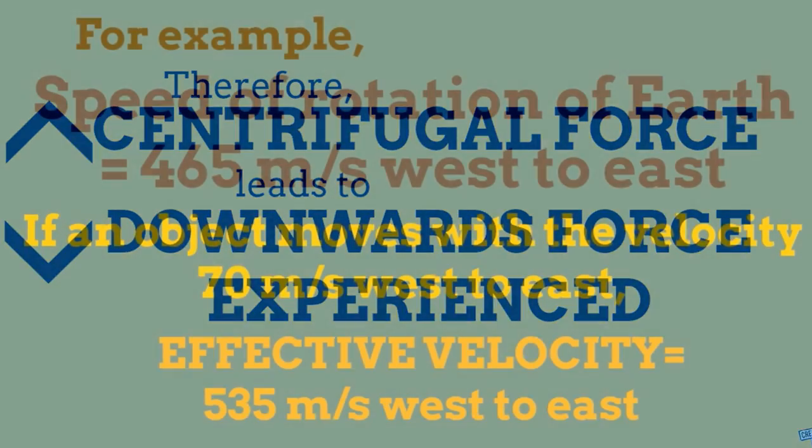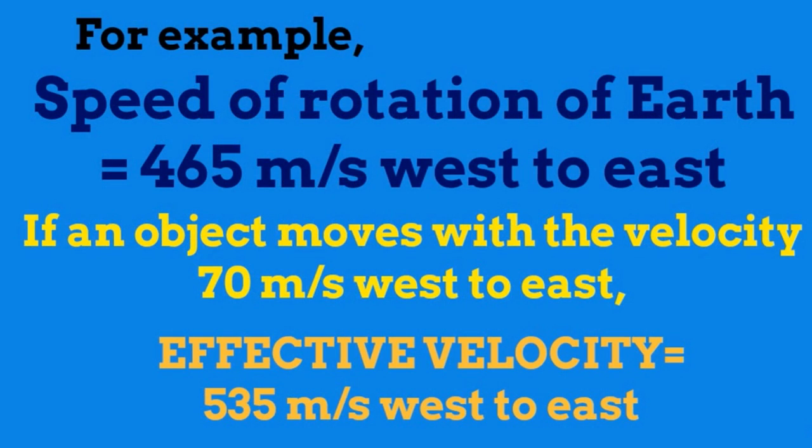Now, let's see an example of the phenomenon. We know that the Earth rotates with a velocity of 465 meters per second west to east. If an object moves with the velocity 70 meters per second west to east, its effective velocity should be 535 meters per second west to east, to a person who is in an inertial frame of reference and observing this from space.